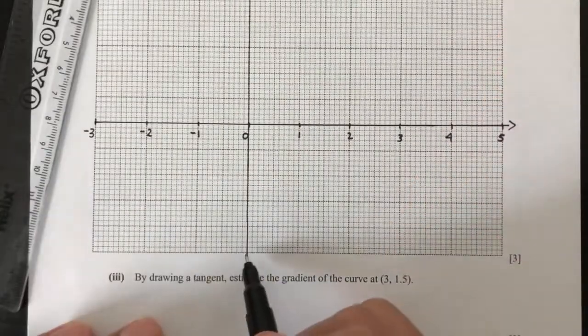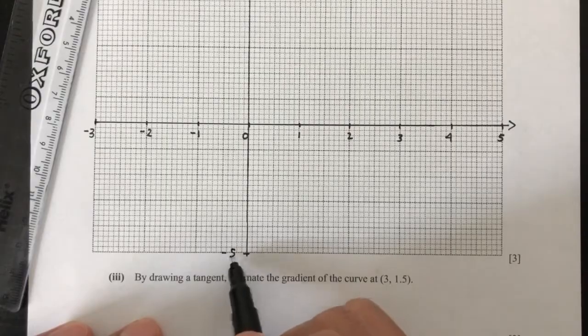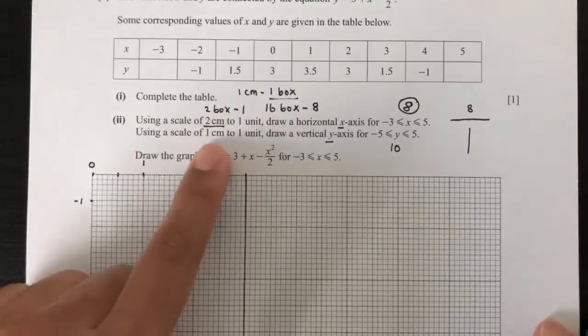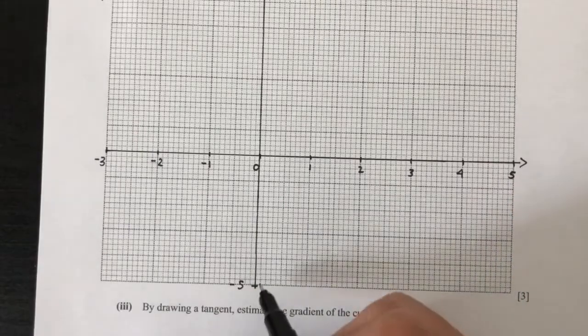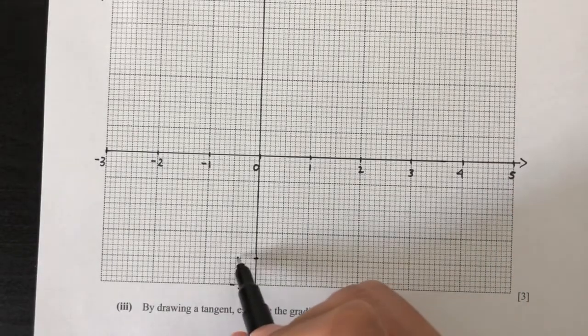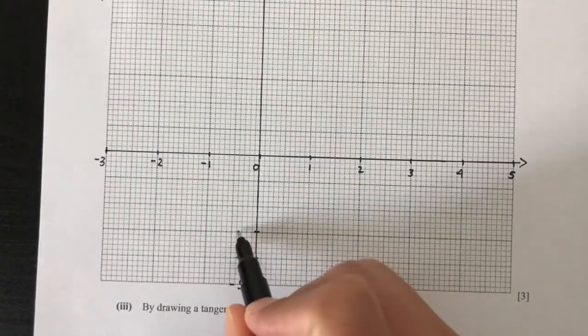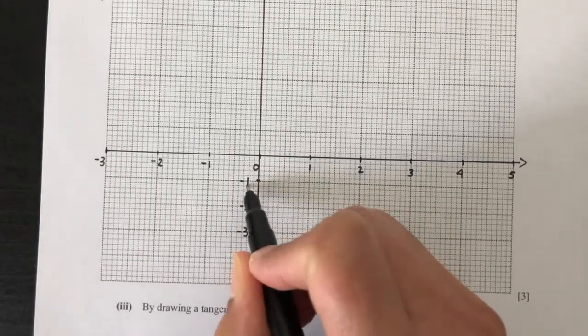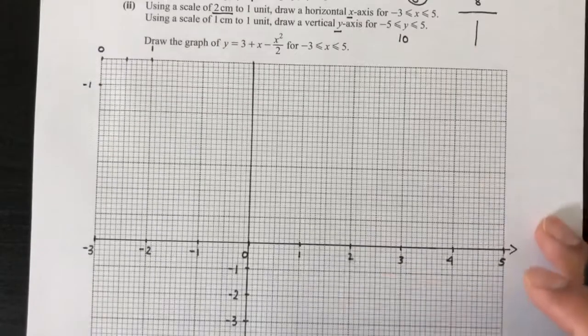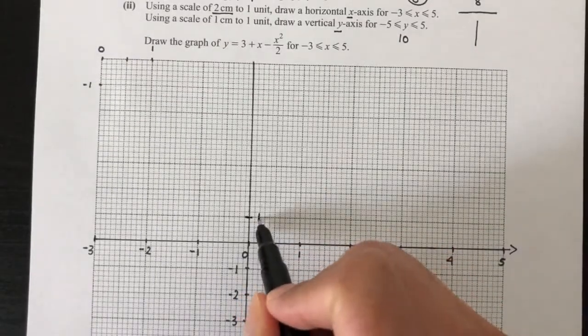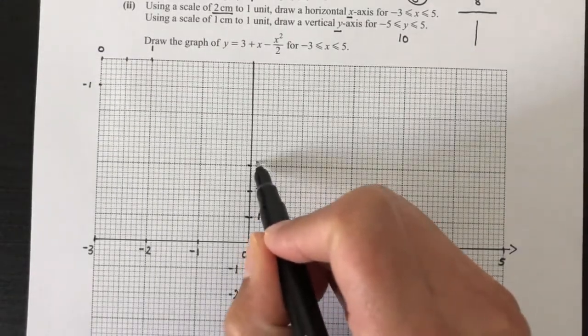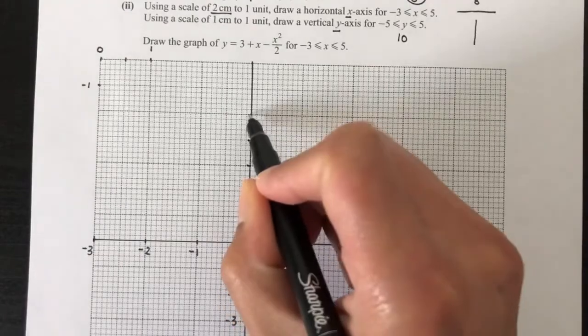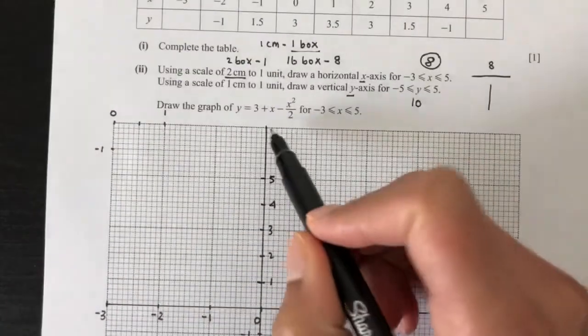So let's continue. From here, we just need to have -5. And for your vertical axis, 1 centimeter is 1 unit. So basically, 1 box is 1 unit. So 1 box is here. That is -4, 1 box, -3, -2, -1, and that will be 0. Now keep going up. That will be 1 box, 2, 3, 4, and 5. And label your axis as your y.